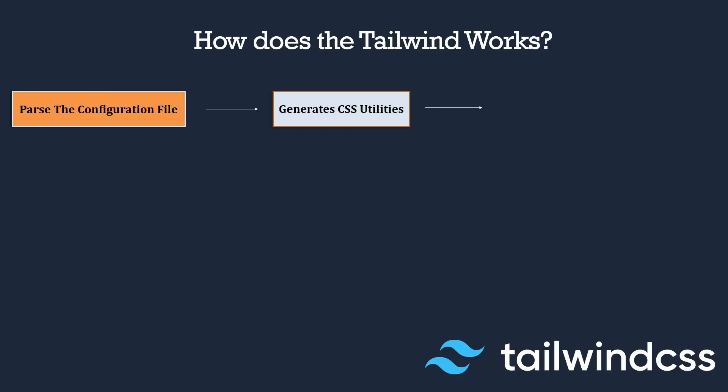After that, Tailwind processes and optimizes your CSS code. Tailwind is known for optimization. After defining the CSS file of utilities, it optimizes your CSS code. The Tailwind CLI runs PostCSS plugins onto the generated CSS file to optimize the output. PostCSS is like a preprocessor that transforms your CSS code using JavaScript plugins, running those plugins onto the generated CSS to optimize the file.